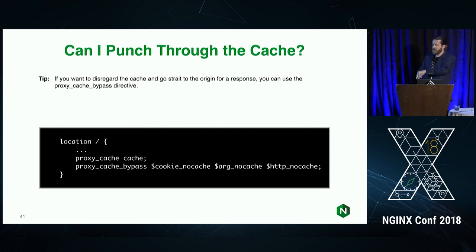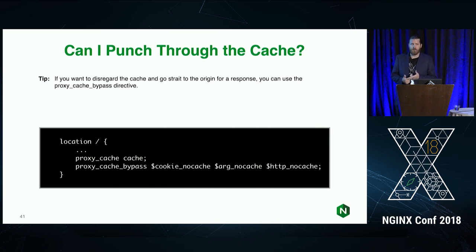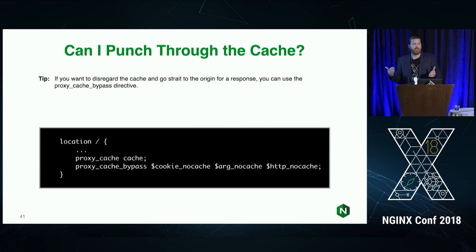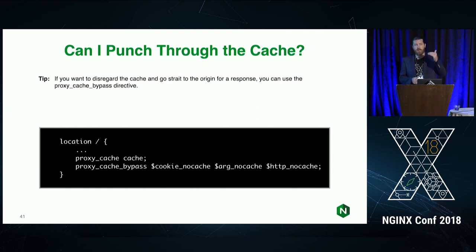There might be situations where you want to punch through the cache. NGINX can do a bypass using proxy_cache_bypass. It looks for the existence of any value in the specified variables. For example, you can check for a cookie named 'no_cache' — if it has any content, NGINX bypasses the cache and fetches straight from the origin. You can also check for an argument like no_cache=1, or a request header like HTTP_NO_CACHE=1. This gives flexibility for users who don't want stale data — for example, a premium vendor that needs fresh data can get a cache bypass.